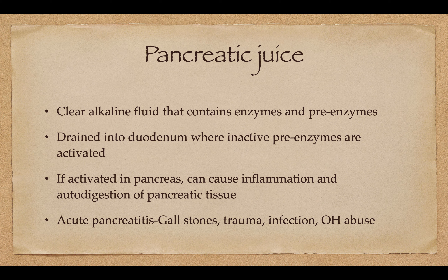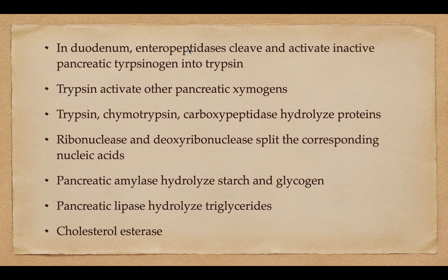Pancreatic juice is an alkaline fluid, and it drains into the duodenum through the duct of Wirsung and the ampulla of Vater. These enzymes have to be inactive, because if they're active in the pancreas they can cause inflammation and autodigestion of the pancreas itself — this is acute pancreatitis, which can be caused by gallstones, trauma, infection, and alcohol abuse. In the duodenum, enteropeptidases cleave inactive trypsinogen into trypsin, and trypsin is the key — it activates all the other zymogens: chymotrypsin, carboxypeptidase, which hydrolyze proteins; ribonuclease, which splits nucleic acids; amylase, which digests starch and glycogen; and lipase, which hydrolyzes triglycerides. Cholesterol esterase, of course, hydrolyzes cholesterol.